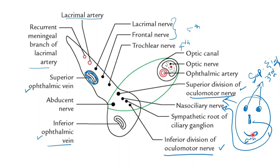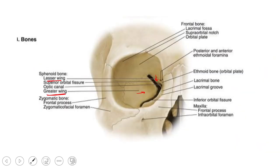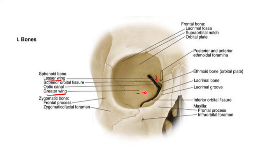Moving on to the inferior orbital fissure: its location is at the junction of the posterior part of the lateral wall and the floor of the orbit. This inferior orbital fissure is limited above by the greater wing of the sphenoid, whereas below it is limited by the maxilla.